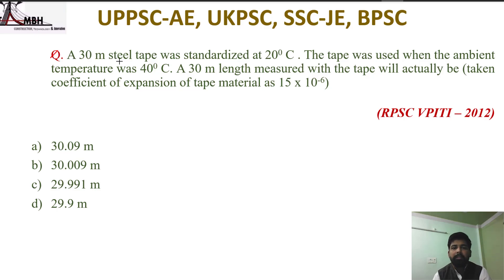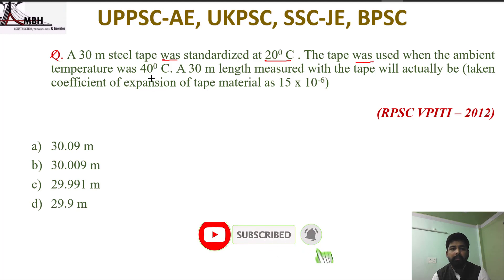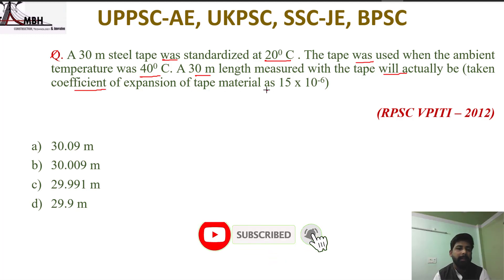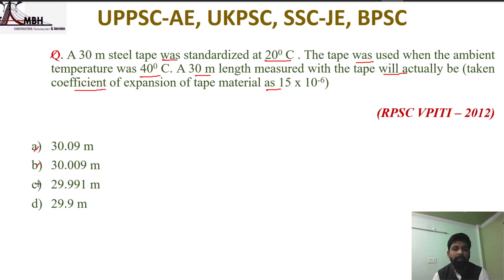The first question: a 30-meter steel tape was standardized at 20 degrees centigrade. The tape was used when the ambient temperature was 40 degrees centigrade. If a 30-meter length is measured with the tape, what will the actual length be? The coefficient of expansion of the tape material is 15 into 10 to the power minus 6. Options are 30.09, 30.009, 29.991, and 29.9. This question is from RPSC 2012.